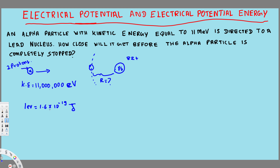Let's create the equations. We know that the initial kinetic energy equals the final potential energy: KE₀ = PE_f. We know that potential energy can be calculated using kq₁q₂/r. So we apply that here.